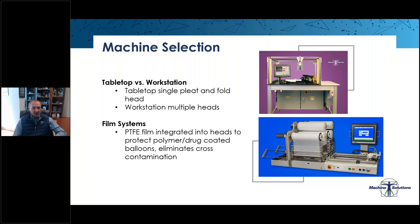We also offer film systems. These machines utilize an integrated layer of film laced through the head, protecting the balloon surface from the steel elements on either the pleat or fold side. This allows you to protect that polymer and drug coating from being damaged in the pleat fold process, or potentially cross-contaminating throughout the day if some of that coating came off on an element and was transferred to a subsequent balloon.